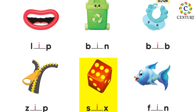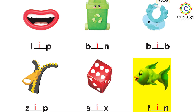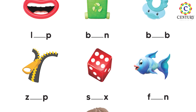And 'six' ke andar hamarai paas 'S' bhi hai aur 'X' bhi hai, and 'i' missing hai — yaani ki letter 'i'. Ab 'fin' ke andar bhi hamarai paas 'F' ka sound bhi hai, 'N' ka sound hai, lekin 'e' ka sound nahi hai — toh hamne yahan pe letter 'i' likhna hai.